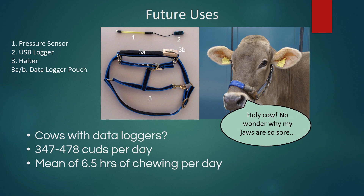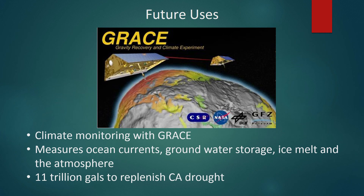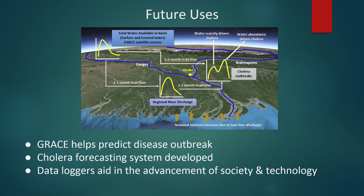This is one example of how data logger usage is only limited by imagination. On a more serious side, data loggers are seeing an ever-growing use in climatology. NASA's Gravity Recovery and Climate Experiment (GRACE) satellites use a variety of data loggers to track ocean currents, groundwater storage, ice melt, and profiling the Earth's atmosphere. Using this technology, NASA found that it would take over 11 trillion gallons of water to replace losses suffered during the California droughts, and also discovered a dwindling snowpack that would further exacerbate drought conditions. A team of scientists used the same GRACE satellite data logging technology to predict cholera outbreaks by studying the patterns of terrestrial water storage — they found they could predict cholera outbreaks when terrestrial water storage levels dropped in river basins, inducing less river discharge and causing an influx of seasonal bacterial intrusion.